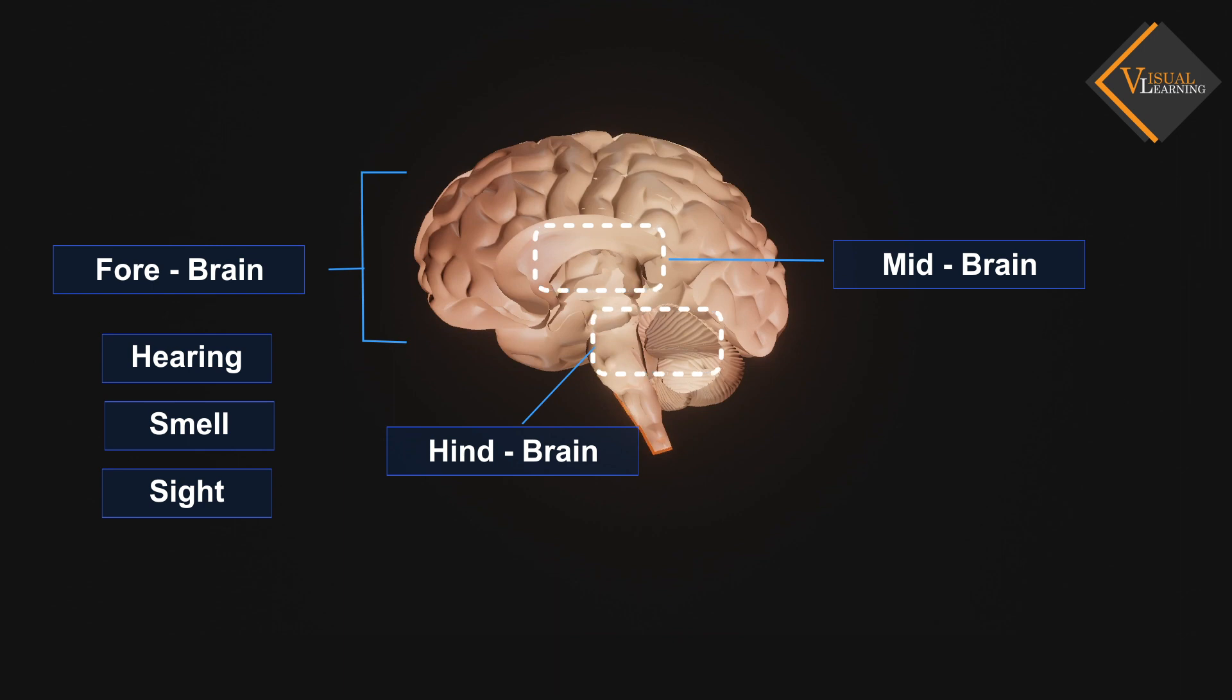There are separate areas of association where this sensory information is interpreted by putting it together with information from other receptors, as well as with information that is already stored in the brain. Based on all this, a decision is made about how to respond and the information is passed on to the motor areas, which control the movement of voluntary muscles.